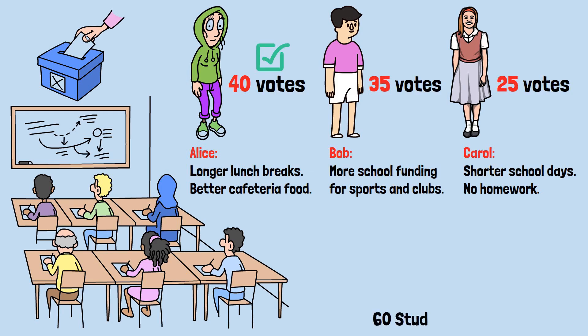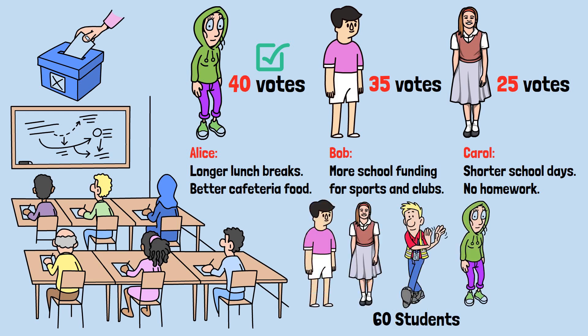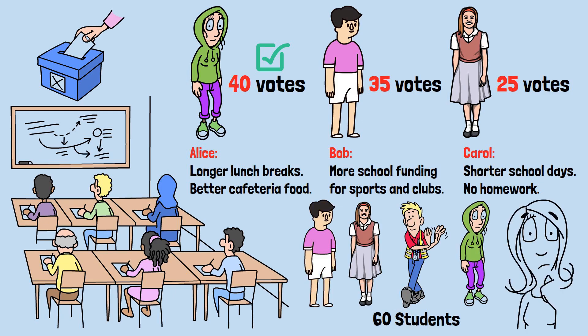But wait — 60 students, the majority, voted against Alice. They preferred Bob or Carol. So how is Alice the legitimate winner when most people didn't want her?